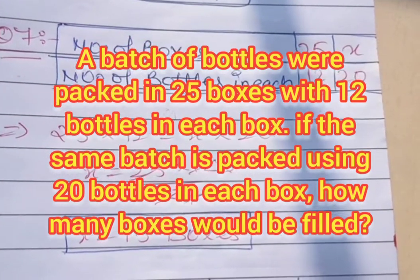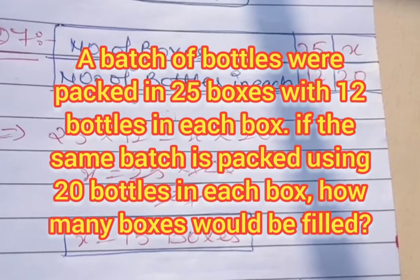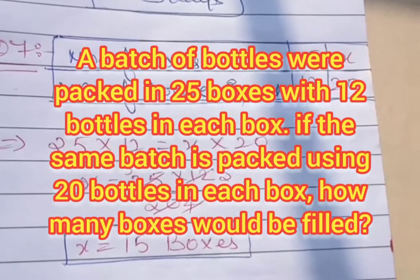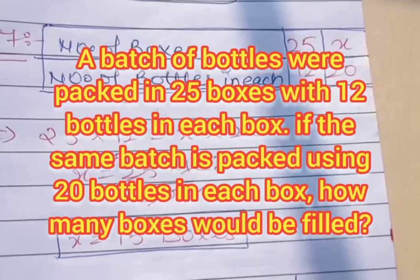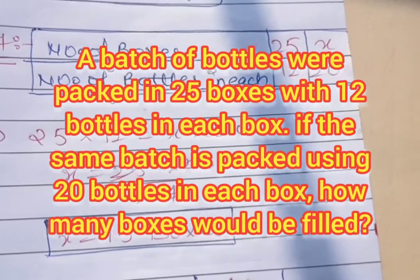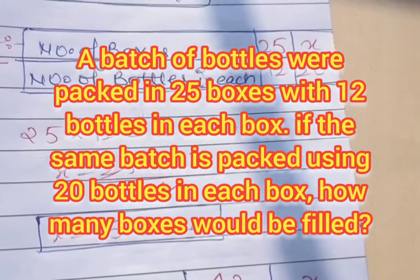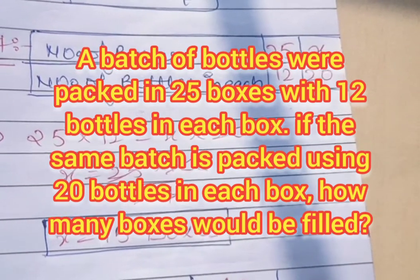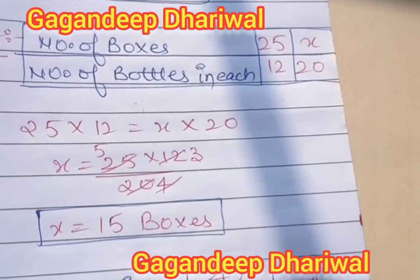Question number seven: a batch of bottles were packed in 25 boxes with 12 bottles in each box. The total number of bottles is the same, but now they are packed using 20 bottles in each box. How many boxes would be filled? You have to find the number of boxes.